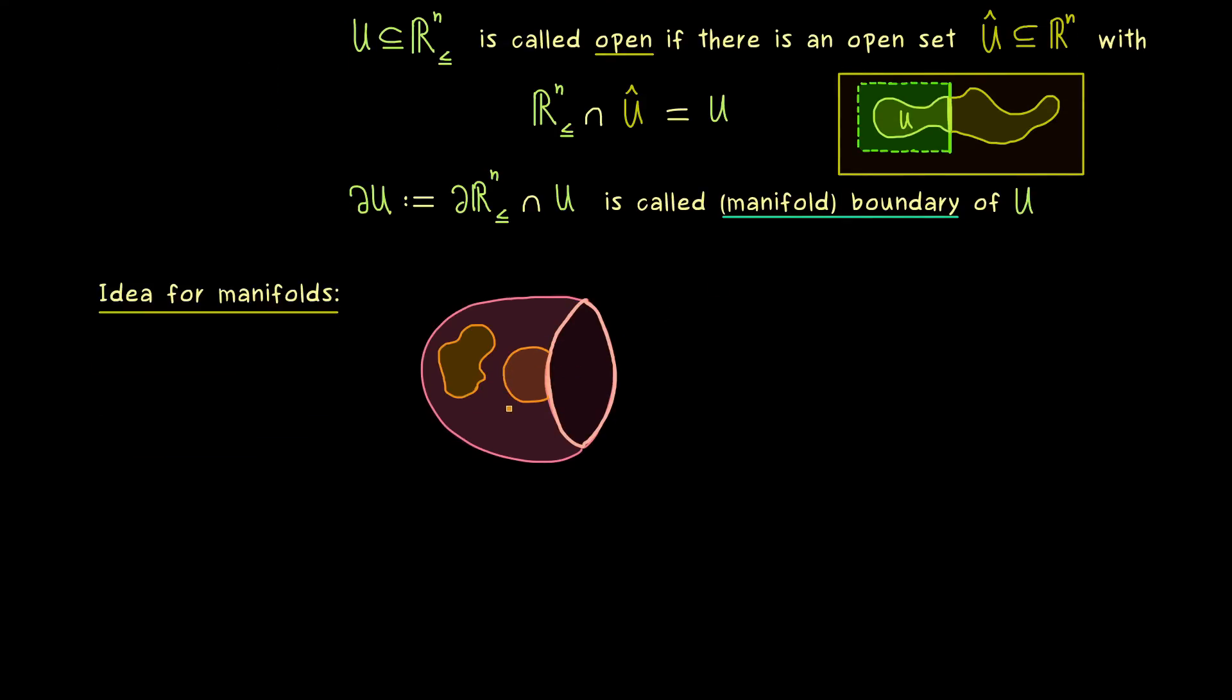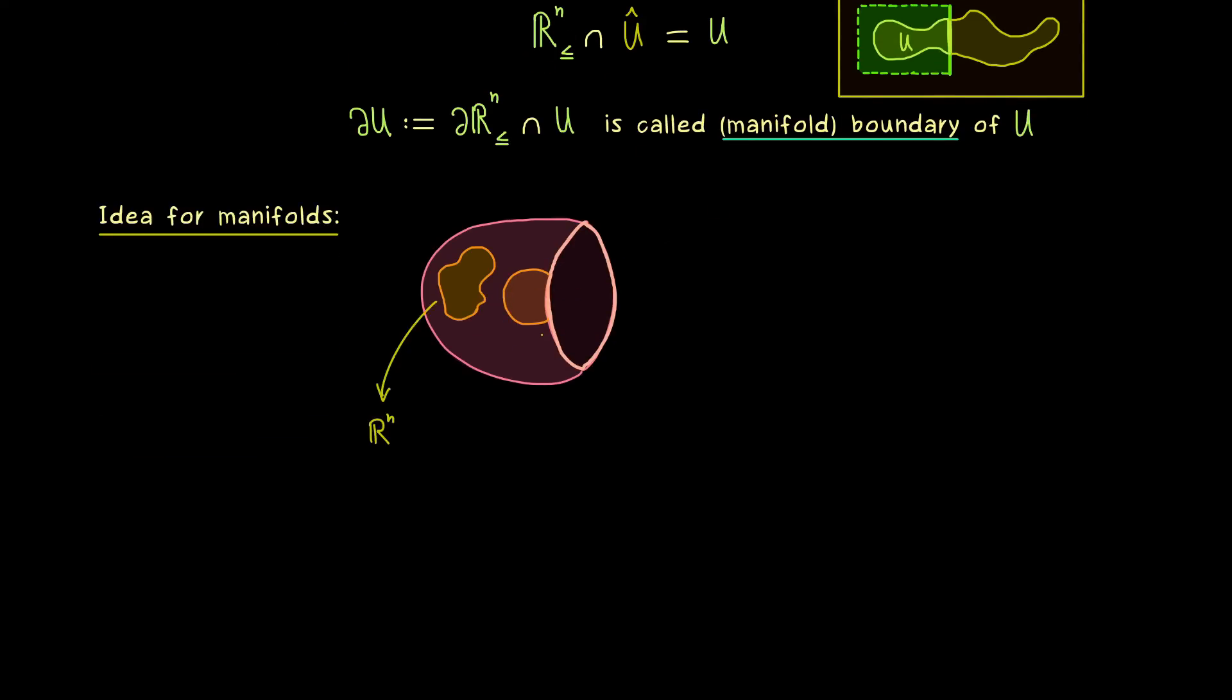Hence for the first kind we have a homeomorphism to Rⁿ. And for the second kind we have one for the half space. So not so complicated, we just have to distinguish these two cases. Moreover, if we want to go to smooth manifolds, we also have to talk about smooth structures on this manifold with a boundary. And there you know, this simply means that we have to look at transition maps.